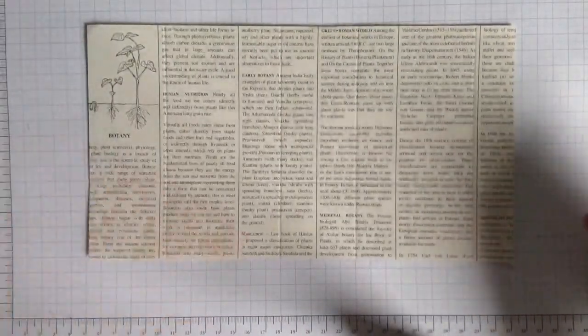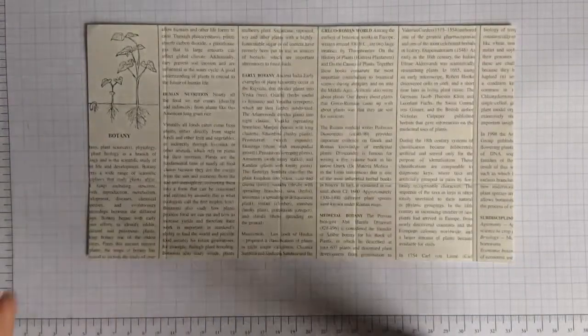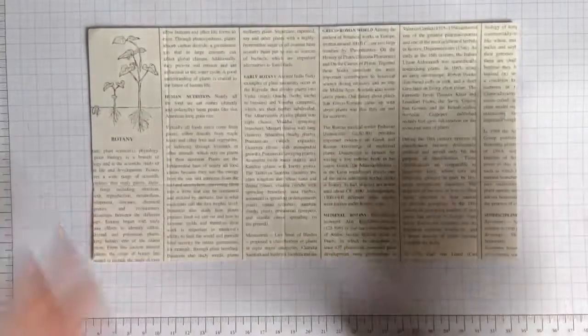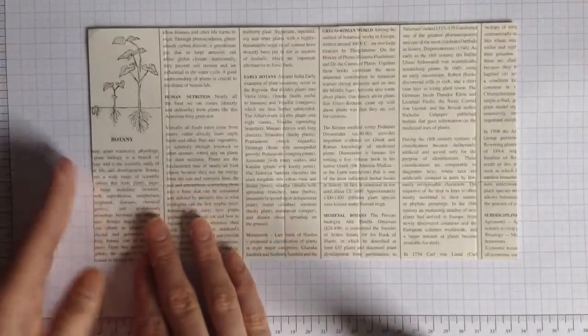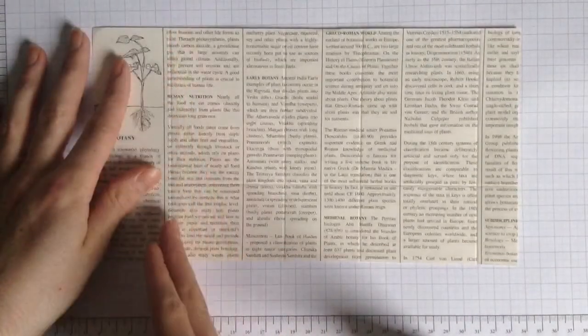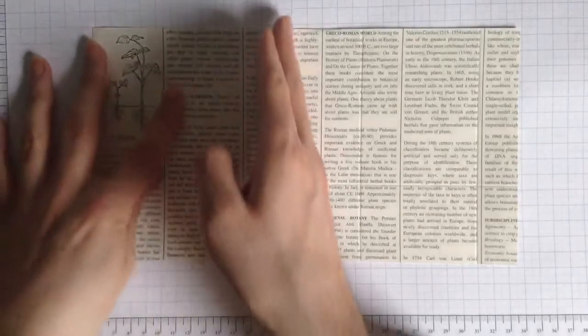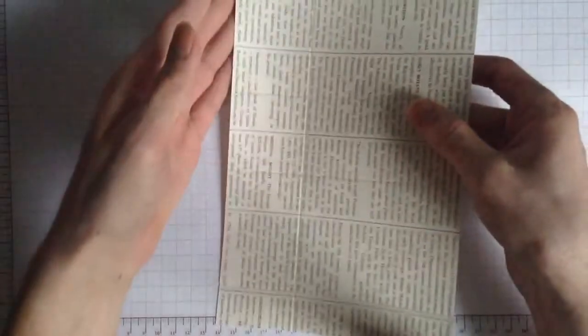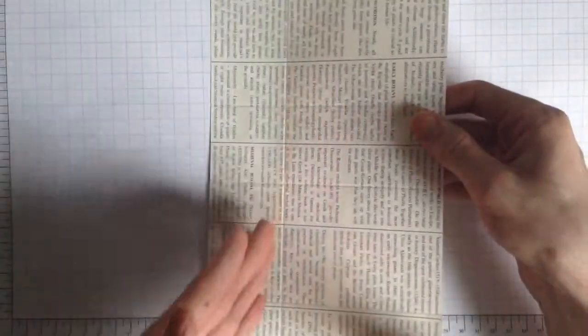So to start with, I'm starting with a piece of first edition paper measuring 6 inches by 11. I've already scored this just purely for the time sake of the video and I've scored it at 2 inches, 5 inches, 7 inches and 10 inches. And then I've turned it lengthways and I've scored 2 inches down.